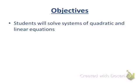Today, Lesson 1.12, we're going to be solving systems of quadratic and linear equations. Systems of equations are equations that involve the same variables — two equations that have the same variables where we can find a common solution. We've already done this with linear equations using three techniques: graphing to find the point of intersection, substitution, and elimination. All of those methods can be used here. Today we're going to focus on two techniques: graphing and substitution.